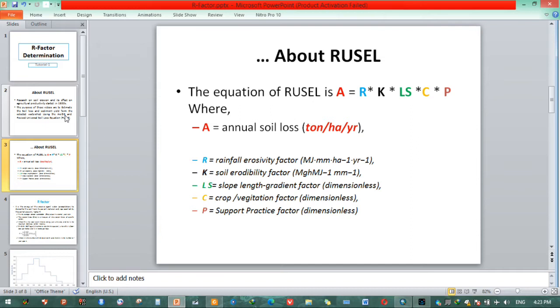The other two, that is R-Factor and K-Factor are with dimensions. For R, MJ mm hectare per hectare per year. For K, MJ H per millimeter.